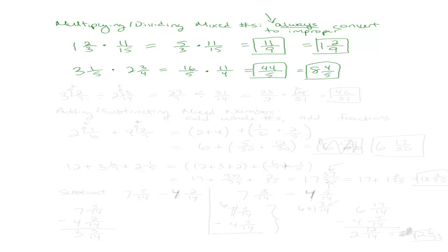Let's say we want to divide instead of multiply — it's not really any different. Say we have 3 and 2 sevenths divided by 2 and 3 over 14. Again, I'm going to convert to improper, then divide. Convert each mixed number to improper, then flip and multiply. I can reduce, and I get 2 times 3 is 6, giving 46 over 31. You can express that as a mixed number. Dividing mixed numbers is pretty easy once you remember to convert to improper first.